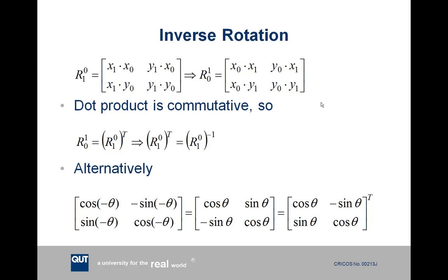Through a bit of math and knowledge of matrix properties, we know that the dot product is commutative. So if we want to reverse a transformation, we can just take the inverse of this rotation matrix. You can also work this out by substituting the negative of the angle — for instance, rotating negative theta degrees — and then simplify using your knowledge of how these trigonometry functions simplify to confirm this.